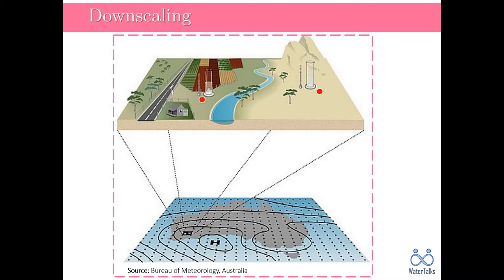In many cases, our local scale is station scale because we record hydroclimatic variables at stations or sites. In this regard, statistical downscaling is achieved by developing a deterministic or probabilistic mathematical model between GCM outputs and hydroclimatic variables at monitoring sites.